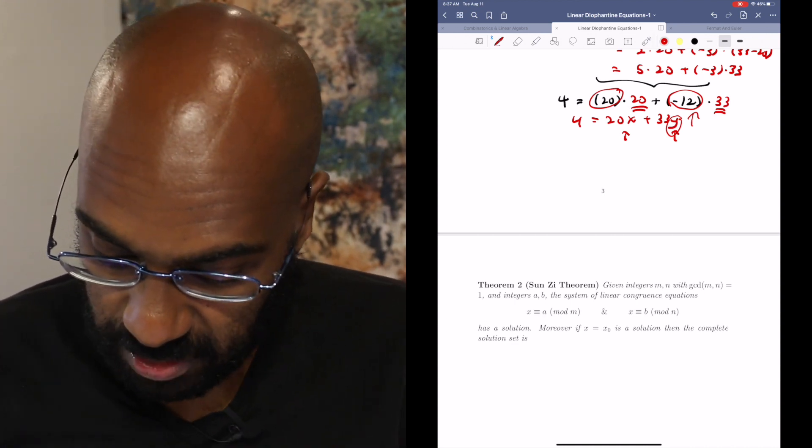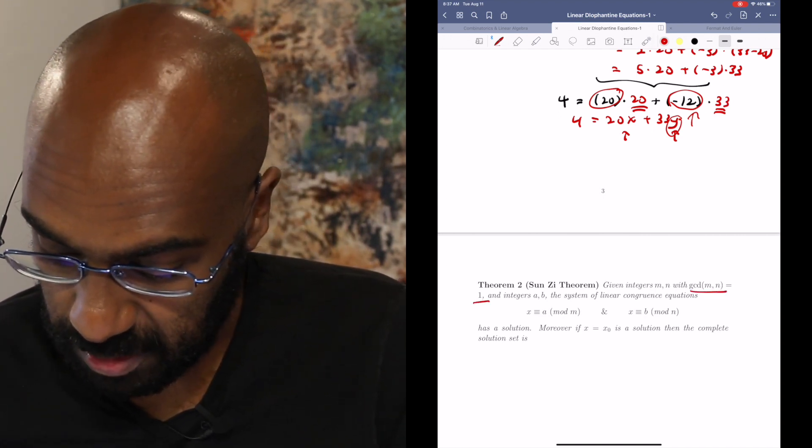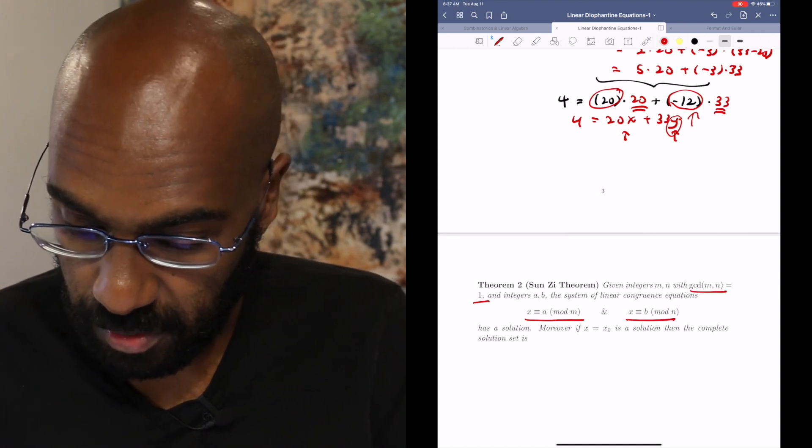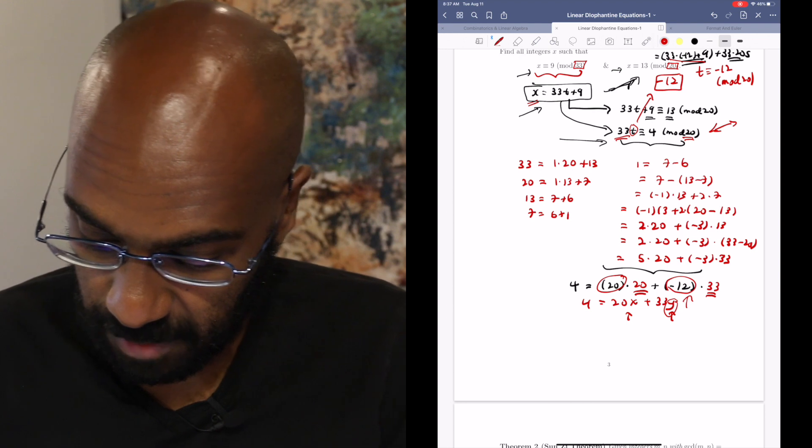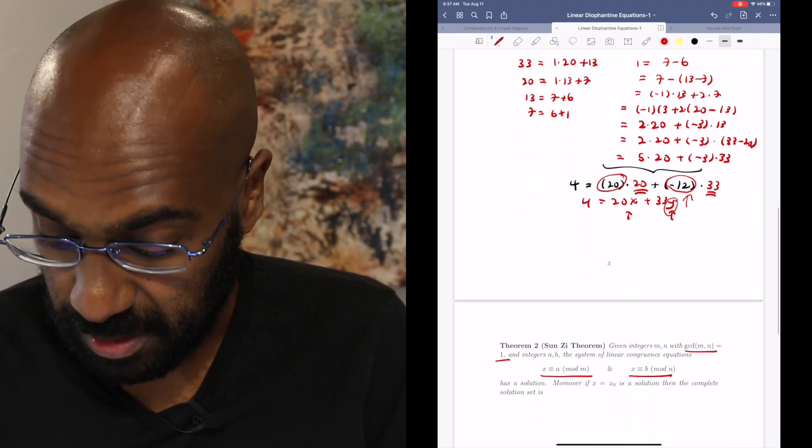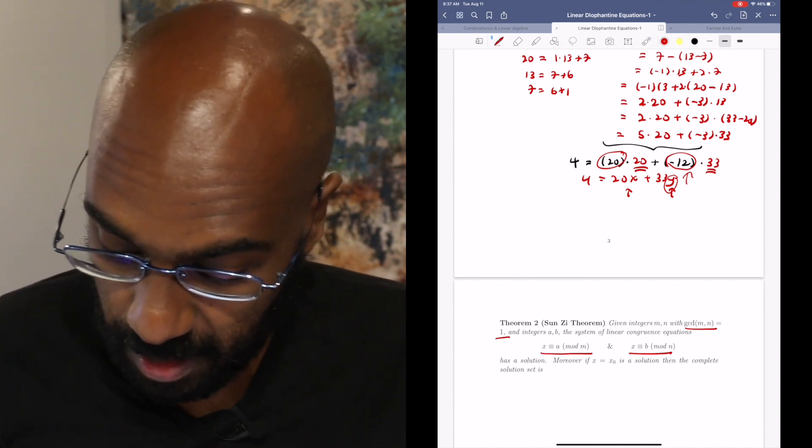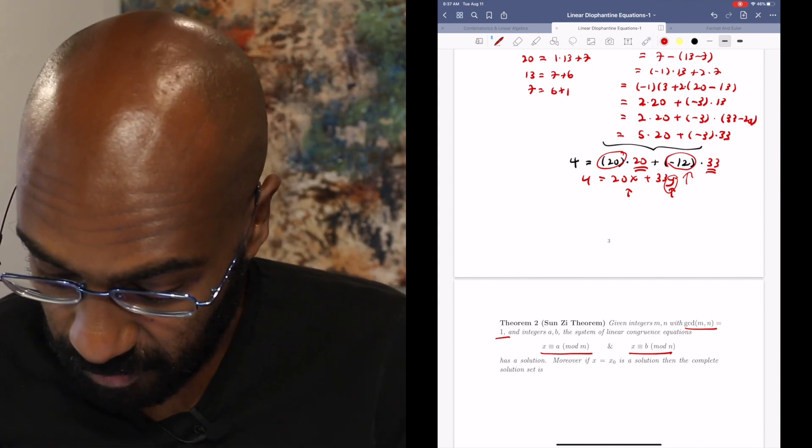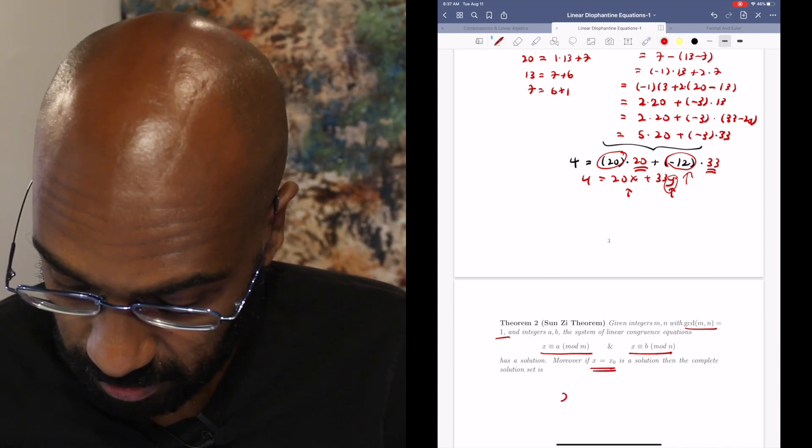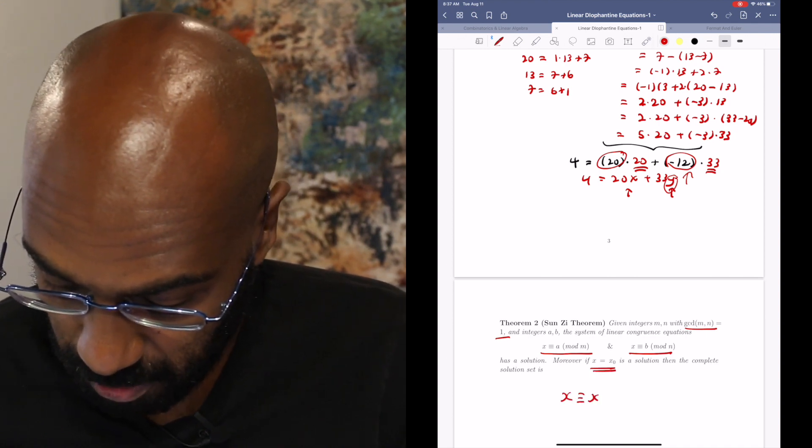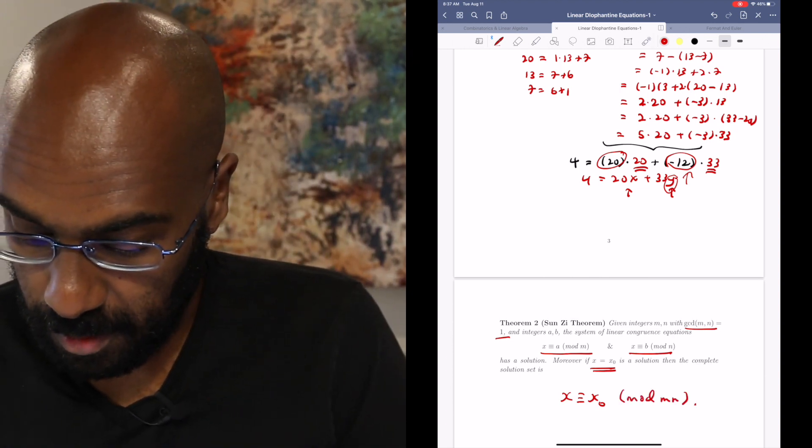And the theorem says if you have the GCD of m and n being 1, and you're solving this system of congruence equations like we have here, where x is congruent to a mod something, and x is congruent to b mod something else, where those two things have greatest common factor 1, then this definitely has a solution. And if you have one solution, the complete solution set is all things congruent to this particular number, modulo mn.